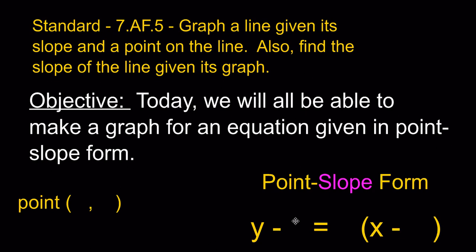Point-slope form is y minus the y1 coordinate, and you can see that y1 coordinate is the second number in your ordered pair. And that equals the slope, or m, times the quantity of x minus the x1 coordinate, which is the first number in your ordered pair.